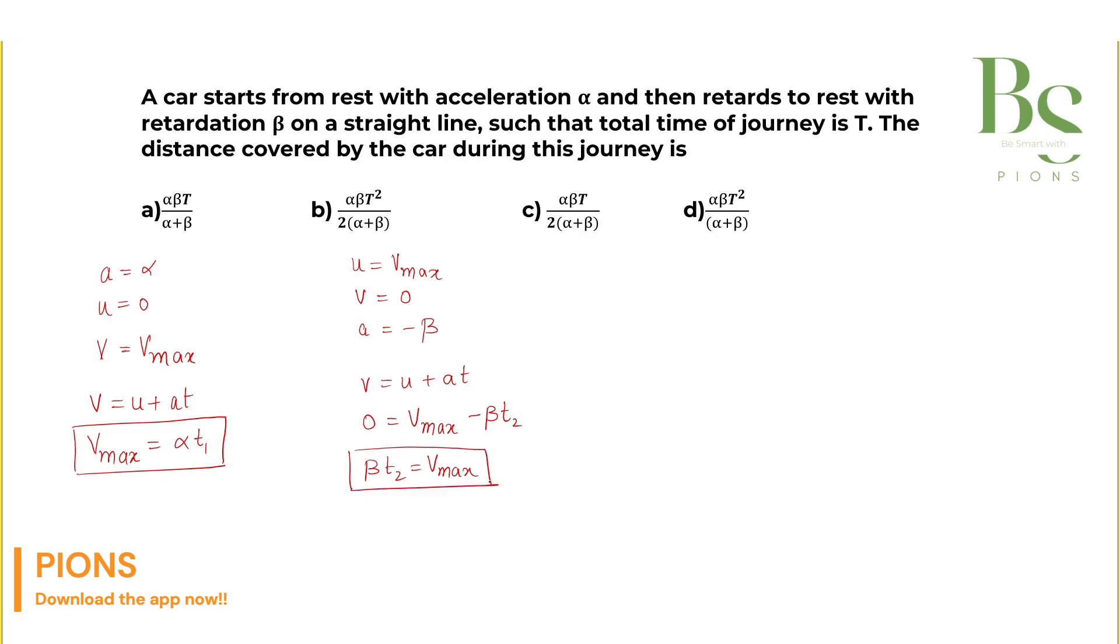So these are the two equations. Now they are saying the total time of the journey, the total time is capital T. And that will be equals to T1 plus T2. And what is T1 from equation 1? It is V_max divided by alpha plus what is T2? V_max upon beta.